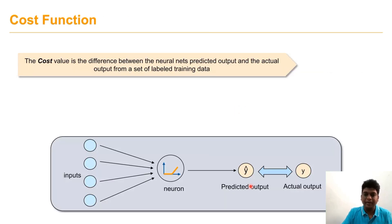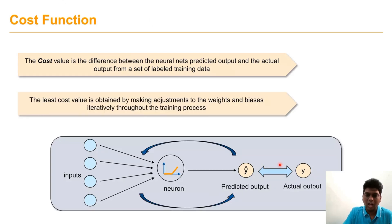The cost function captures the difference between the actual value and the predicted value. This cost function is minimized by making adjustments to the weights and biases.